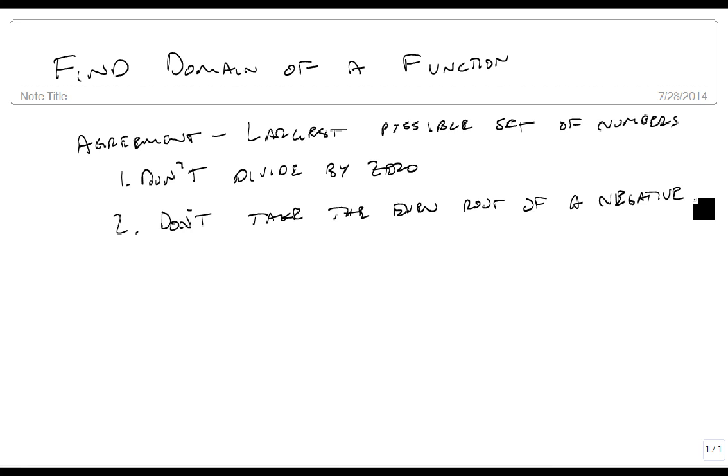The first example we're going to look at is f(x) = 1/(4-x²). Well, this doesn't have any even root, so it's only rule number one that we need to worry about. We cannot allow this denominator to be zero, so we want 4-x² to not equal zero.